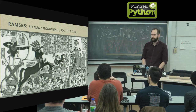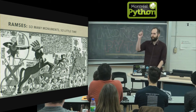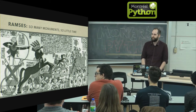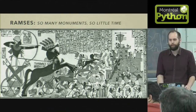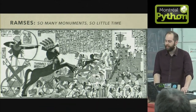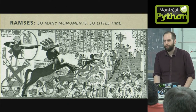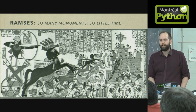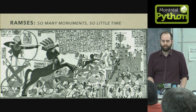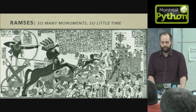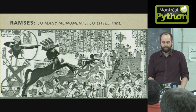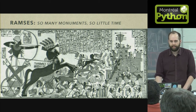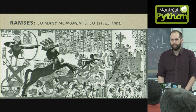I'm Chris and my partner Jonathan is over there. We're from a little startup called Brandicted, and we're here to show you a little example project we've been working on lately called Ramses. I'll give the backstory for that.